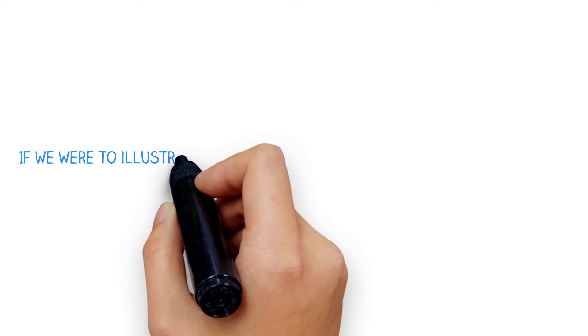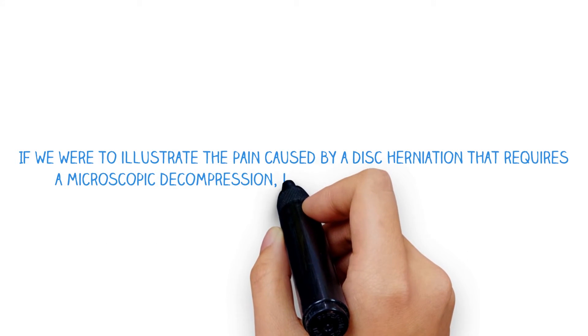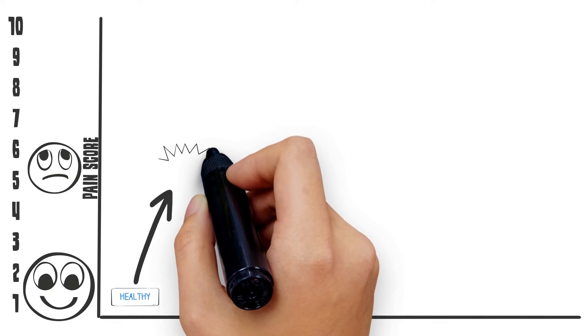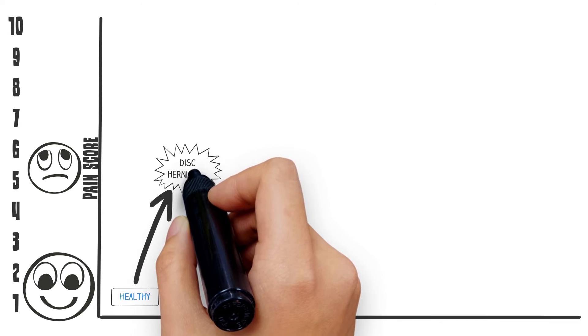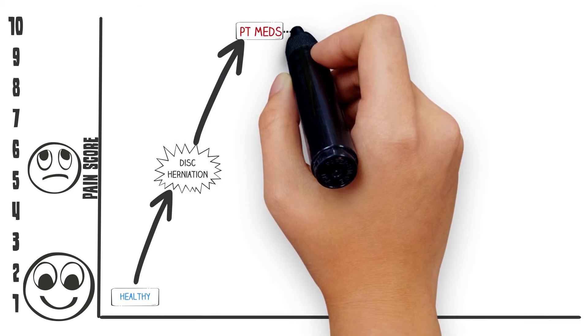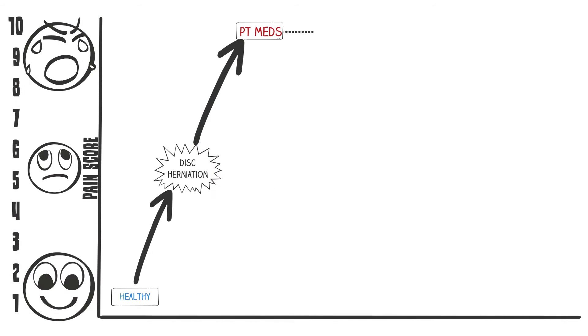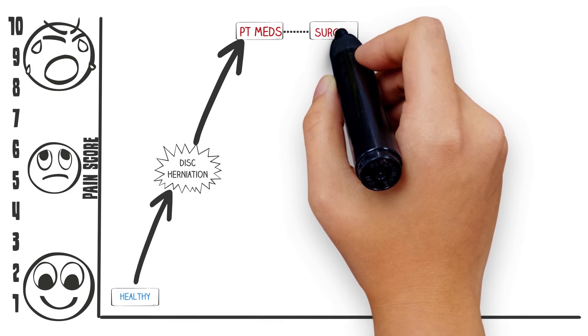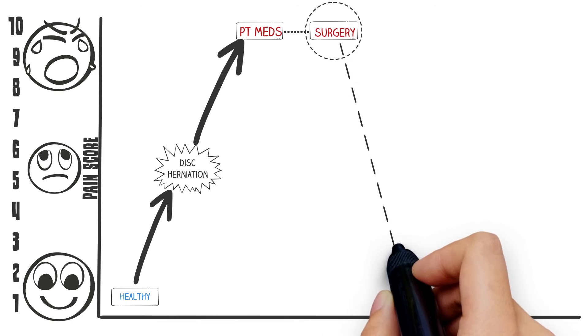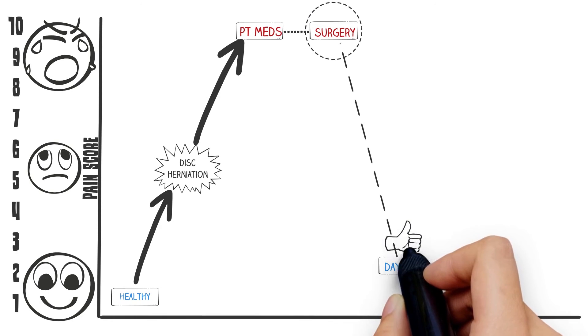If we were to illustrate the pain caused by a disc herniation that requires microscopic decompression, it might look something like this. The nerve root is happy until a disc herniation squeezes it. Anti-inflammatory medications, muscle relaxants, and physical therapy help decrease the pain, but the pain keeps coming back. This herniation is bad enough that it needs an operation. On the day of the operation, the pressure is finally removed and the nerve root breathes a sigh of relief.